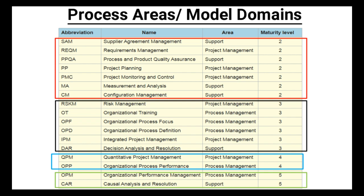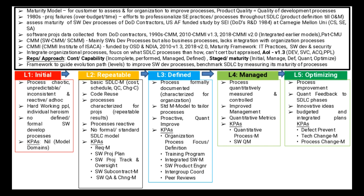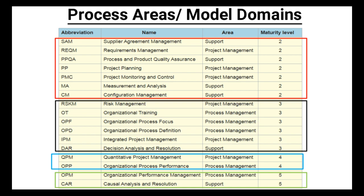These are the key process areas or model domains with regards to each maturity level: Level 2 is Repeatable, Level 3 is Defined, Level 4 is Managed, and Level 5 is Optimizing. If an organization is at Level 5, it should have all these processes in place. If an organization is at Level 2, it should have only the Level 2 processes in place. If an organization is at Level 3, it should have both Level 2 and Level 3 processes in place.